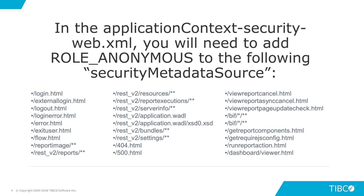This is a detailed video, so I'm going to go step by step for each one. The first part we're going to look at is the applicationcontext-security-web.xml file. You'll need to add ROLE_ANONYMOUS to the following security metadata source. Here's the list — you can pause the video to get the full list, but I'm about to go over it with you here. So let's go step by step.